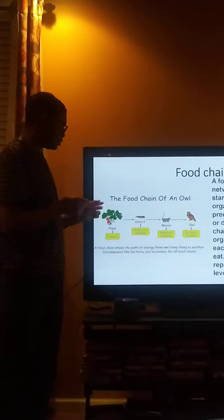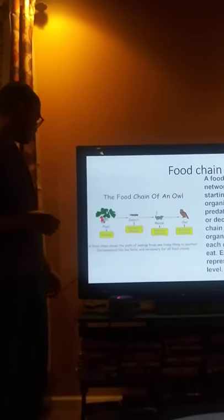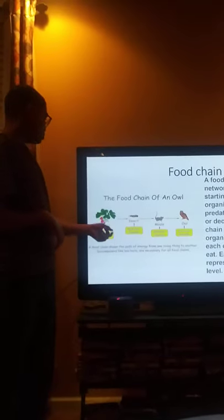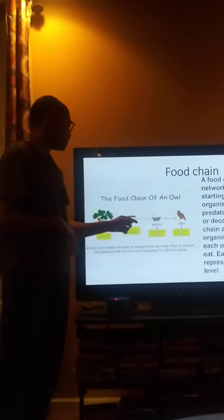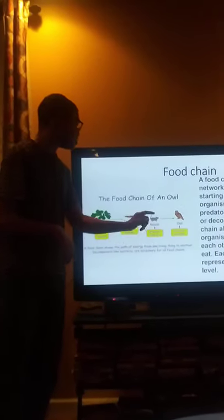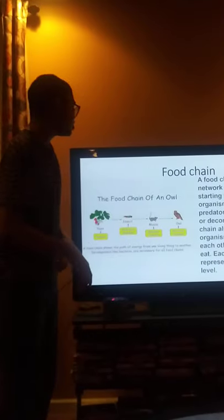Here I got a picture of a food chain of an owl. We got producers, which is a plant. A herbivore, which is an insect. A herbivore, which is a mouse. And an owl, which is a carnivore.